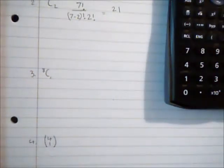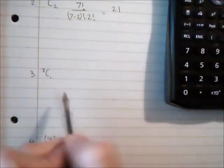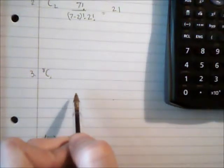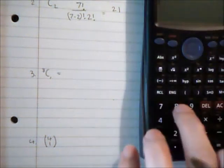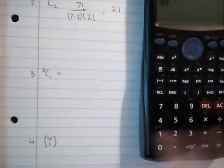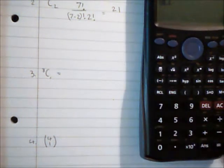For this one, how many ways are there of picking one item from a group of eight? That might seem obvious that there are eight ways but let's just check it on the calculator so eight ncr one is indeed eight.